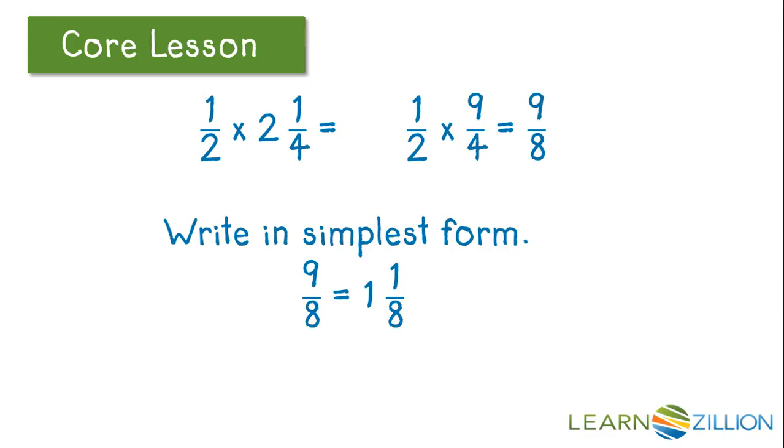And when we write that in simplest form, we know that 8 eighths is 1 whole plus 1 eighth left over. So, our product is 1 and 1 eighth.